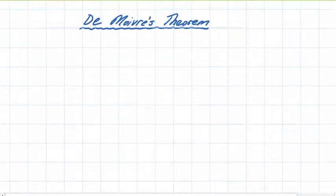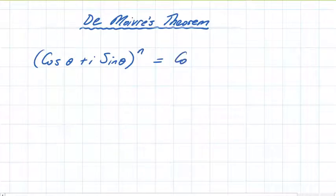We'll start by stating what De Moivre's Theorem is. Cos theta plus i sine theta to the power of n is equal to cos n theta plus i sine n theta. De Moivre's Theorem states that the angle is done in front of the angle, so it becomes cos n theta plus i sine n theta.